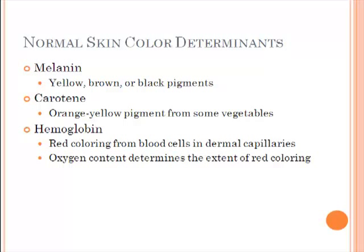One of the main factors is what is called melanin. Melanin is a protein pigment that is produced by special cells called melanocytes. Melanocytes are found in the skin and they produce melanin that is put into the skin cells to give them a certain color. Depending on how much melanin you produce, that's going to determine the color of your skin. A very pale person may have little or no melanin produced.